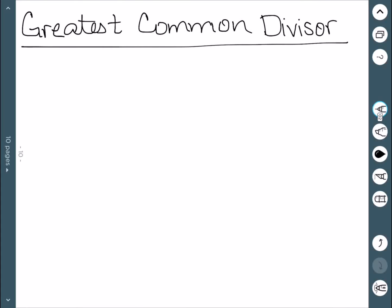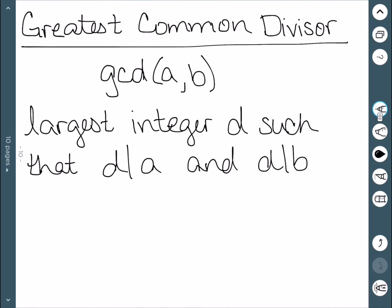We'll now look at the greatest common divisor. When we're looking at the greatest common divisor of two numbers, we are going to abbreviate this by GCD of A comma B. So what exactly does this mean? It is the largest integer D such that D divides A and D divides B.